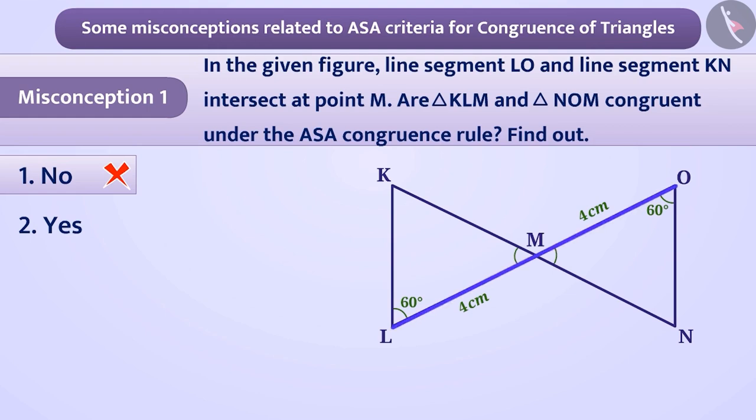In the figure given here, line segment LO and line segment KN intersect at point M. You are aware that the intersection of two lines gives us vertically opposite angles, and vertically opposite angles are equal. So, here we can say that angle OMN is equal to angle KML.